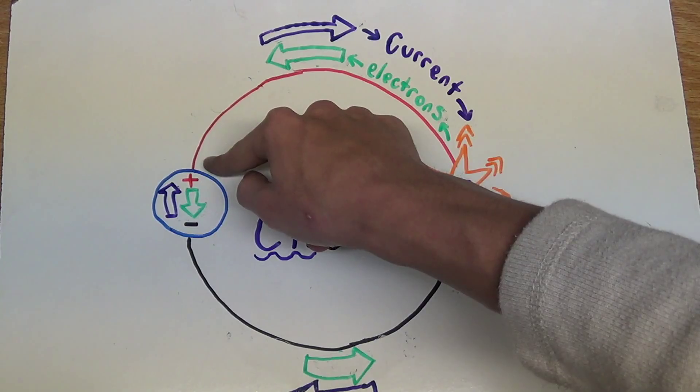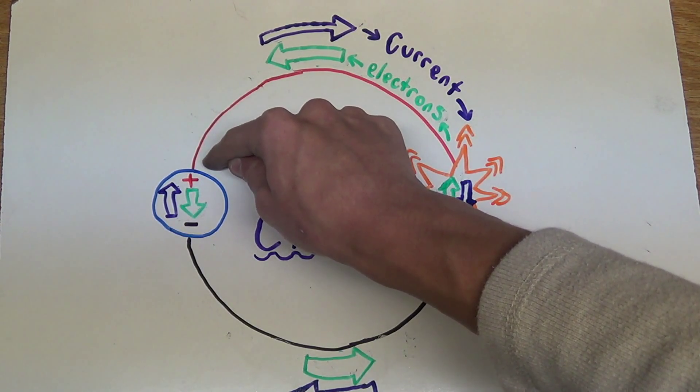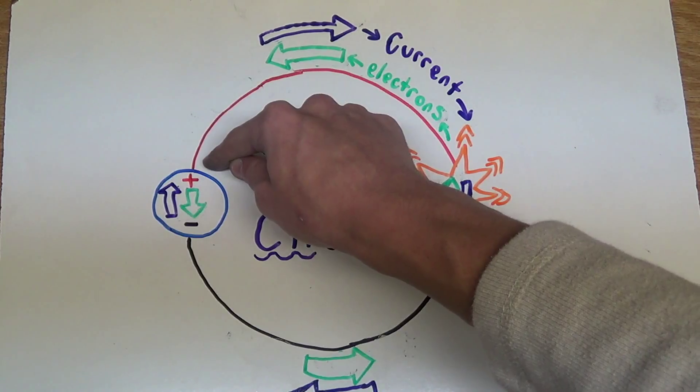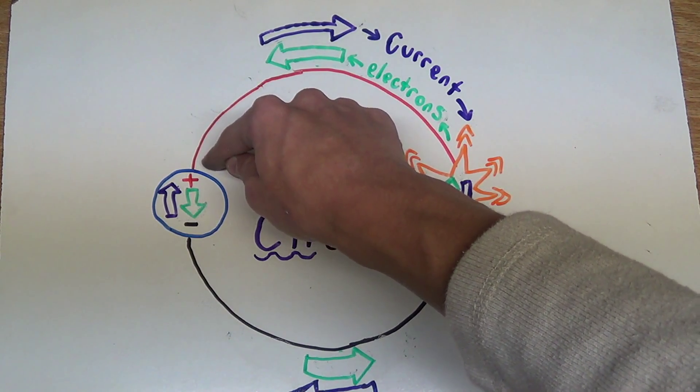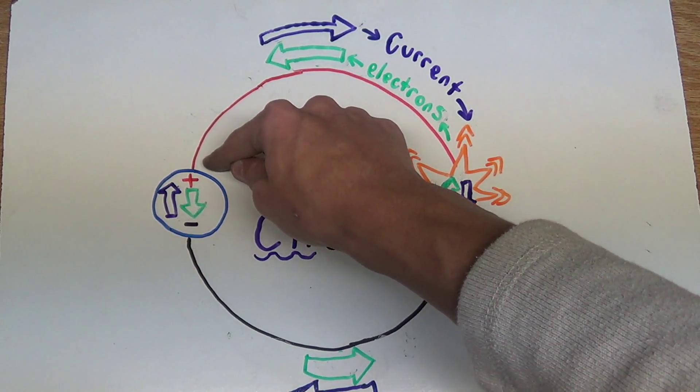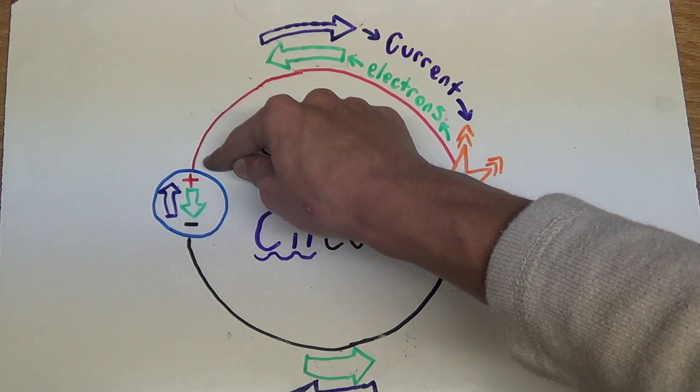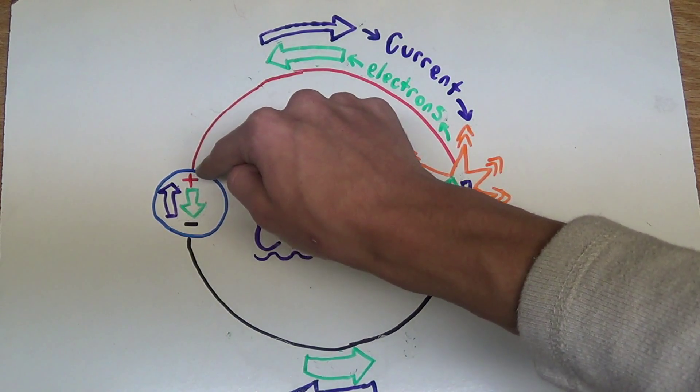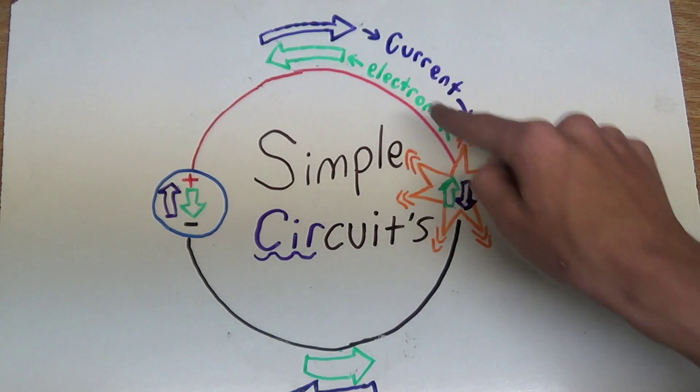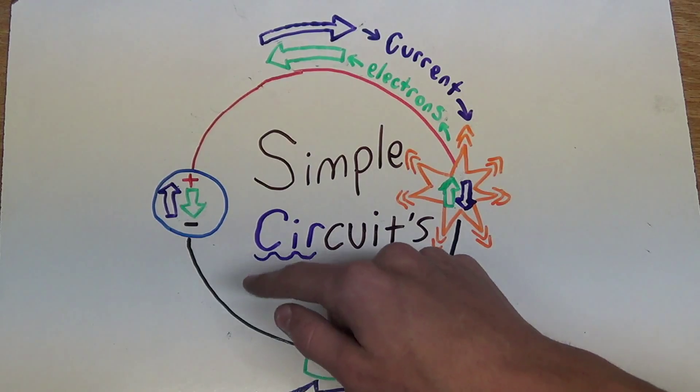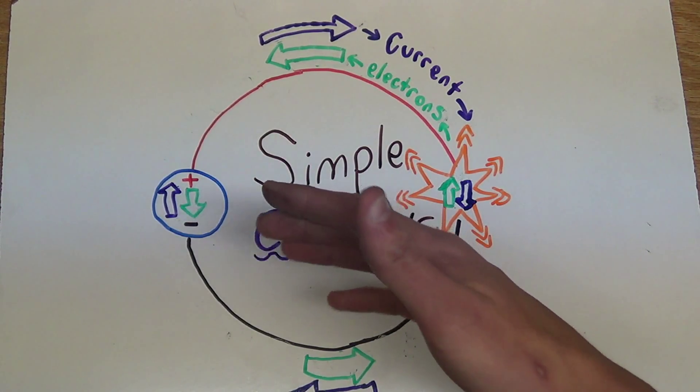However, back when we were first experimenting with electricity, and developed all of the mathematical formulas to use with electricity, we didn't understand this, and we barely even understood what atoms were, let alone electricity. And well, we thought that electricity goes from the positive end of a battery, or any power source, and down through the load, and into the negative. And we built all the infrastructure around this idea.